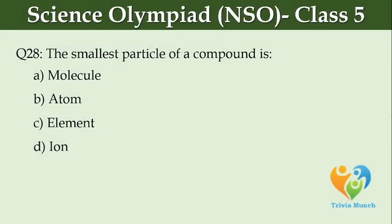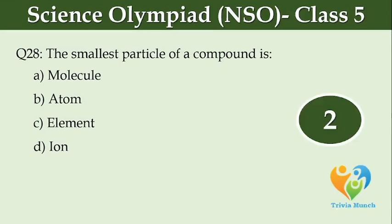The smallest particle of a compound is dash. Option A: molecule, Option B: atom, Option C: element, Option D: ion.